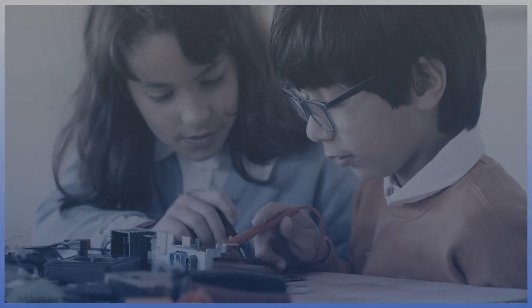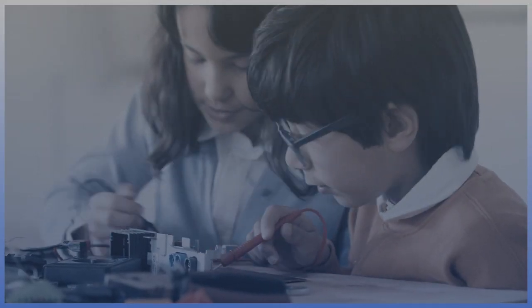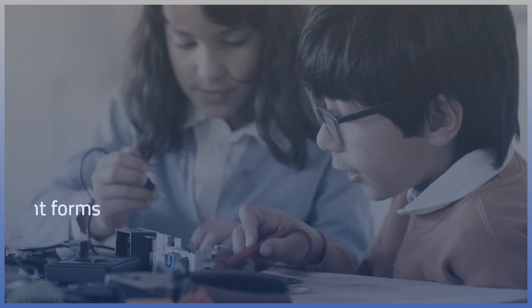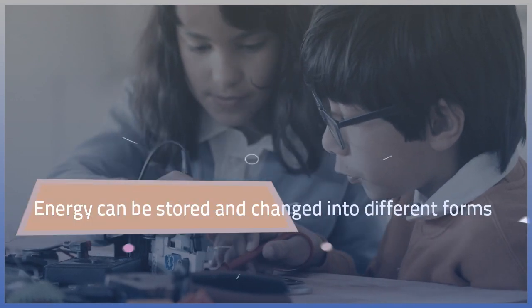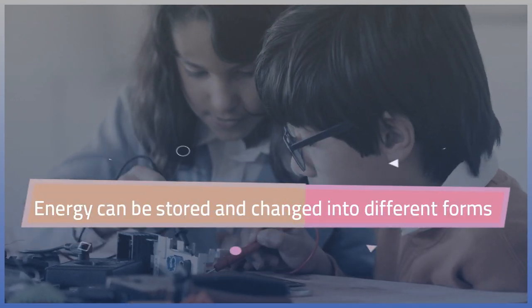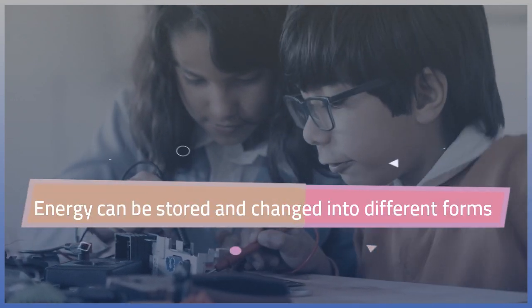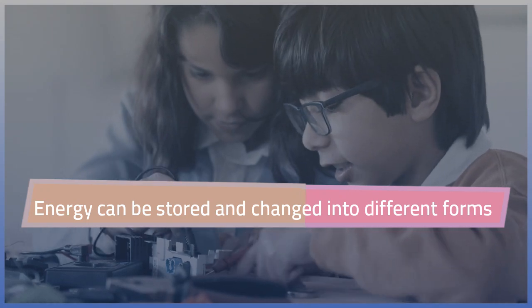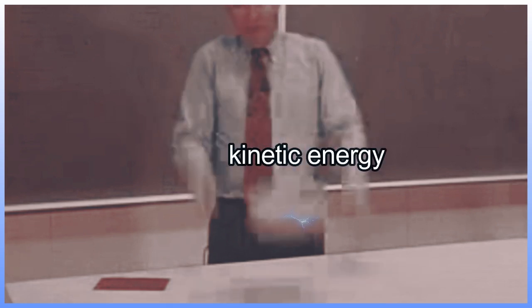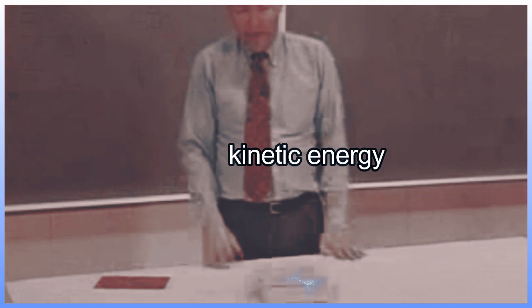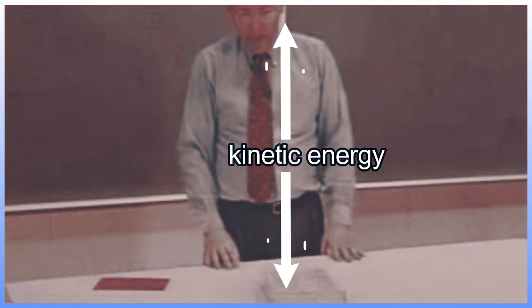Now let's know two facts about energy. Energy can be stored and changed into different forms. Can you tell me an example? When you hold a book, it stores potential energy. When you let it fall down to the ground, the book is moving — the potential energy changes into kinetic energy.